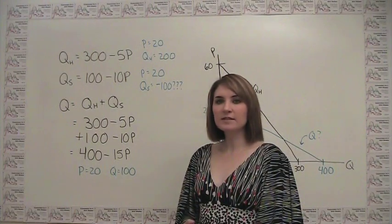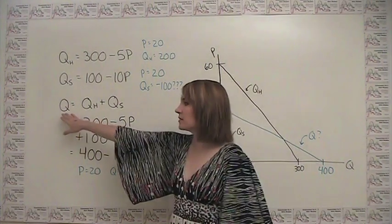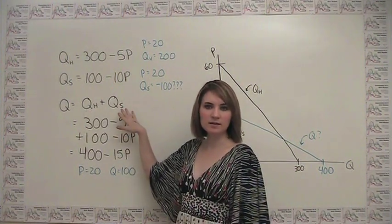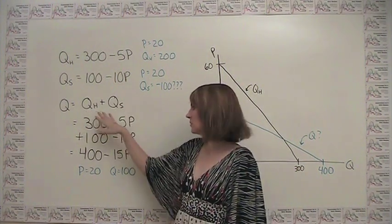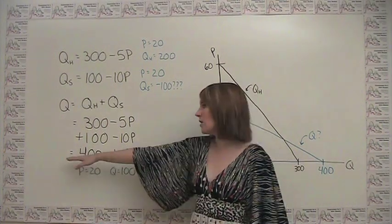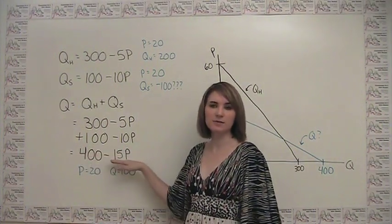If we were to just add the demand curves together, we would say that the total market quantity is equal to the quantity demanded by happy people plus the quantity demanded by sad people. Just add them together and we would get this equation that quantity is equal to 400 minus 15p.